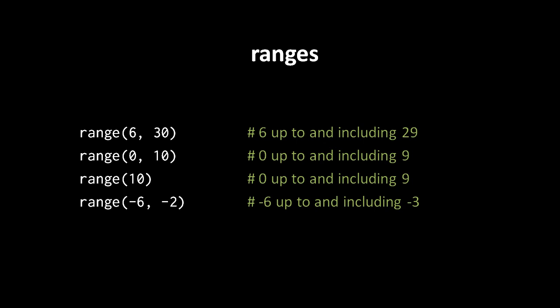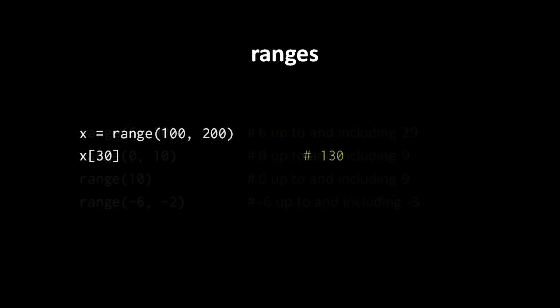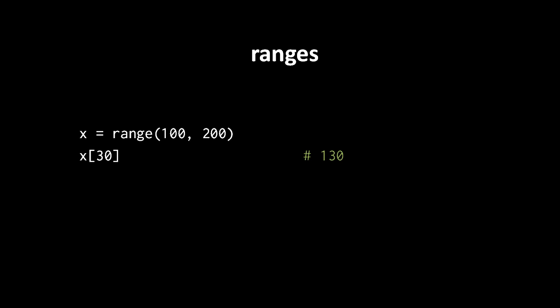If we were to create the equivalent tuple of some range, that tuple would store each and every value. A range object, in contrast, only has to store its starting value and its end value — or more accurately, one past its last value. What happens when you look up the value at a specified index of a range, Python just figures out what the value should be from logic. So we create a range starting at 100 going up to but not including 200, and assign that to x, then retrieve the value at index 30.